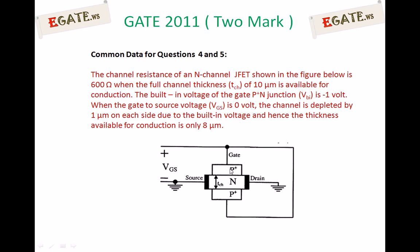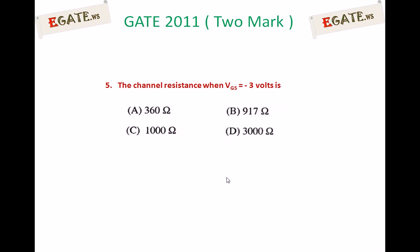This PN junction has a built-in potential of minus 1 volt, and because of that, some depletion region is formed. That depletion region width is 1 micrometer on each side — 1 micrometer on this side and 1 micrometer on the other side when Vgs equals 0. So the effective channel is 10 minus (1 plus 1), which is 10 minus 2, giving 8 micrometers available for conduction.